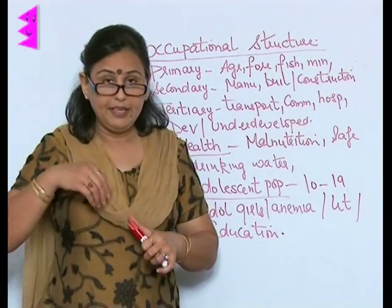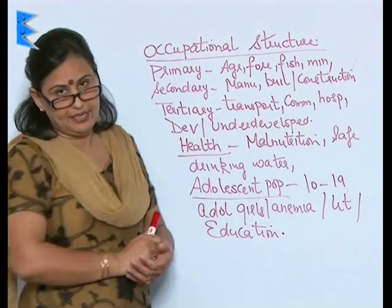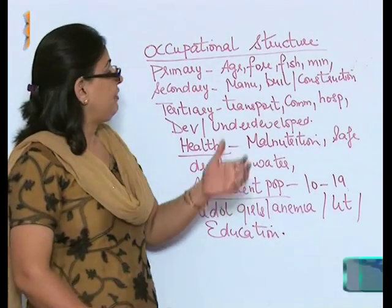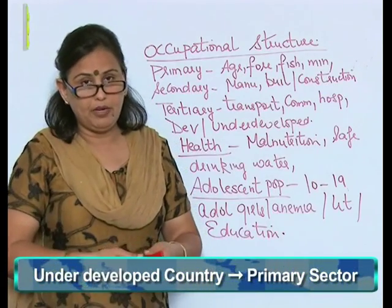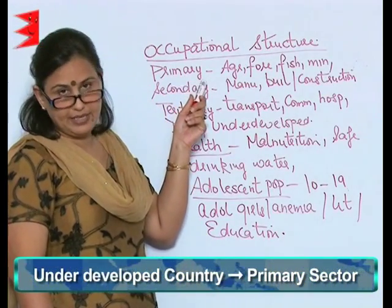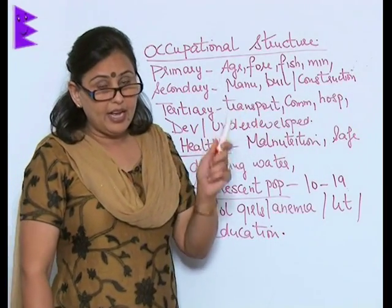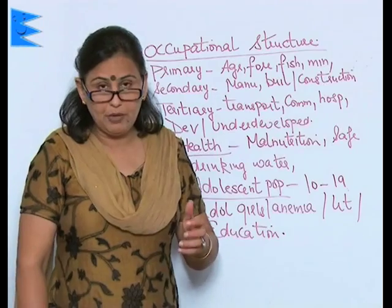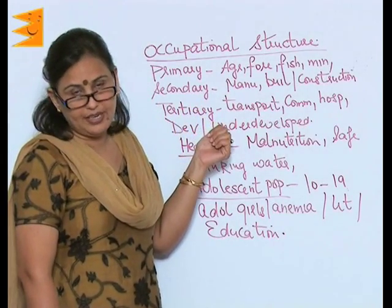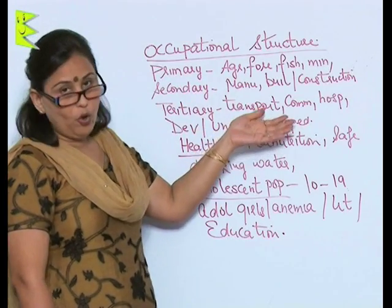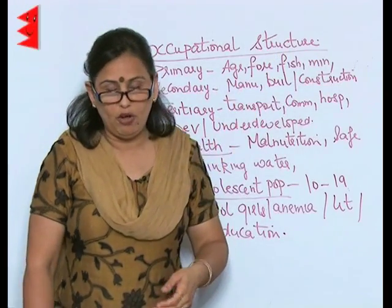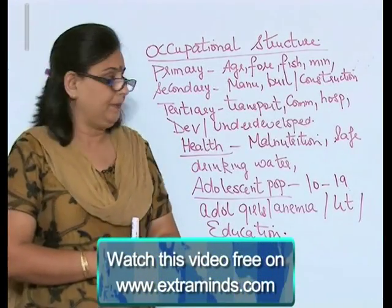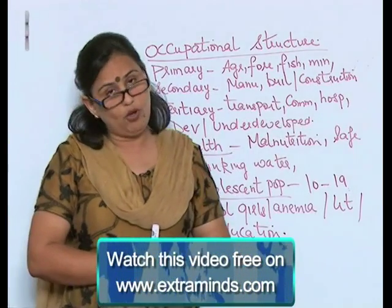By the number of people employed in either of the sectors, we come to know about the development of the country. If it's an underdeveloped country, most people will be involved in the primary sector — and in India, agriculture is still the main occupation. In a developed country, most people are engaged in the secondary and tertiary sectors. So knowing the occupational structure gives us a clear picture of the country's development.